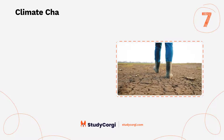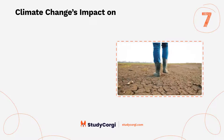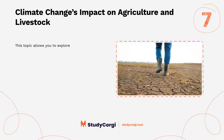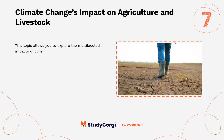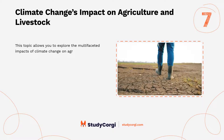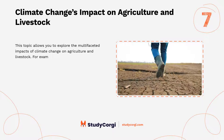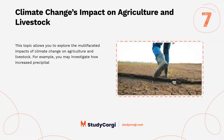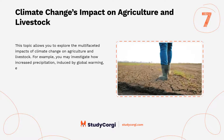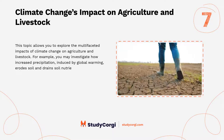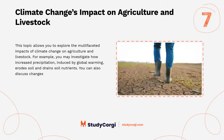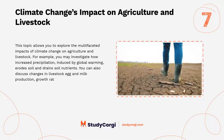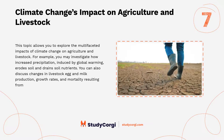Climate change's impact on agriculture and livestock. This topic allows you to explore the multifaceted impacts of climate change on agriculture and livestock. For example, you may investigate how increased precipitation induced by global warming erodes soil and drains soil nutrients. You can also discuss changes in livestock egg and milk production, growth rates, and mortality resulting from climate change.